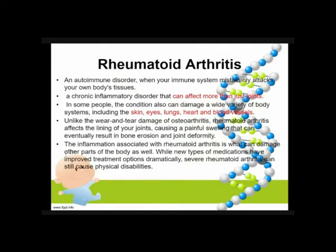Unlike the wear and tear damage of osteoarthritis, your RA affects the lining of the joints, causing painful swelling that can eventually result in bone erosion and joint deformity. Notably, your osteoarthritis is the only medical term in the dictionary that has the suffix '-itis' without actual inflammation. Severe RA can still cause physical disabilities, and it is systemic — affecting skin, eyes, lungs, heart, and blood vessels, not just joints.